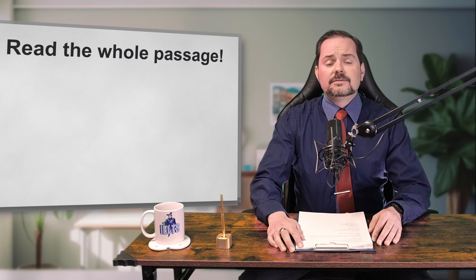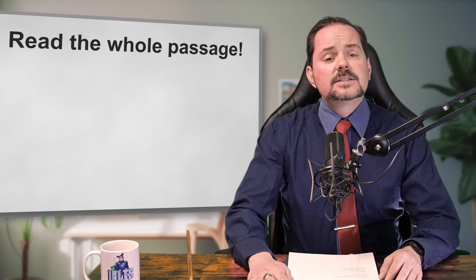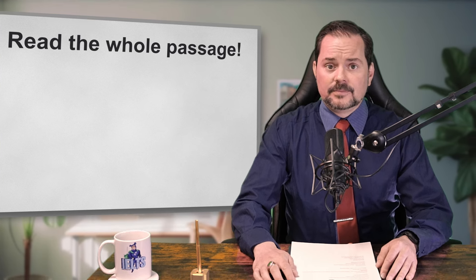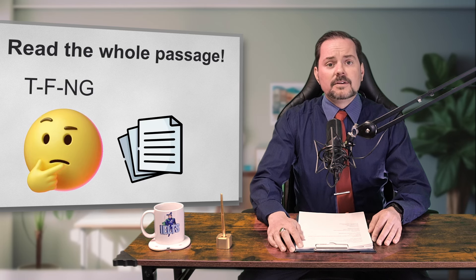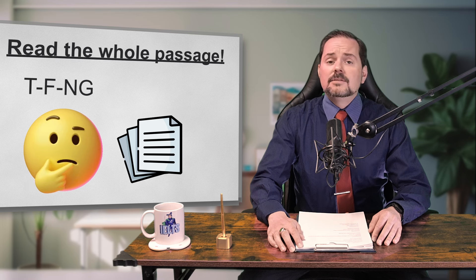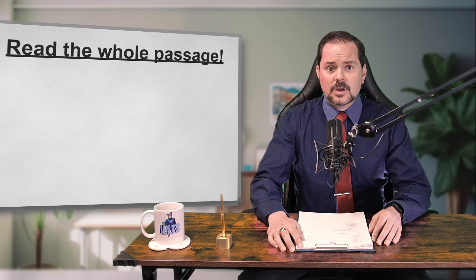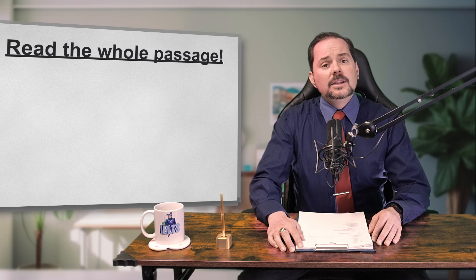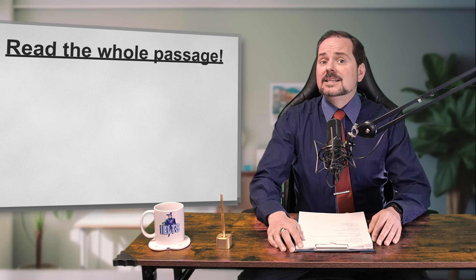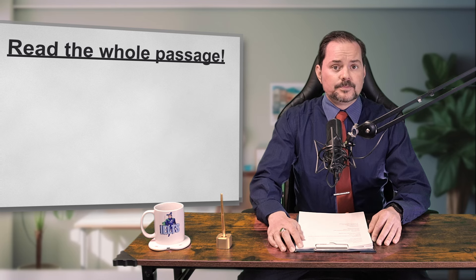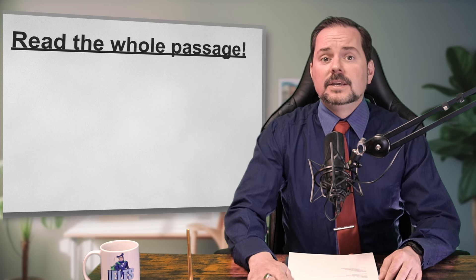The correct strategy to get those higher band scores, especially 8 and 9, is to read the passage at least once. Yes, you can skim and scan for answers, but only after you have read the passage. There are 11 different types of questions that you might see in the reading section. These questions are designed in such a way to negate skimming and scanning. For instance, in true-false-not-given questions, it's virtually impossible to figure out if the information is given or not given if you haven't read the entire passage.